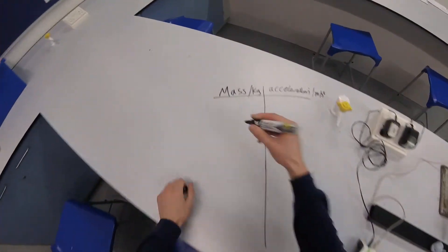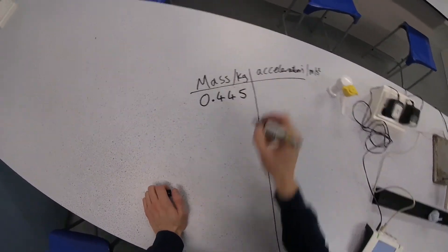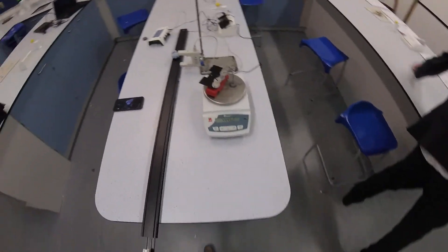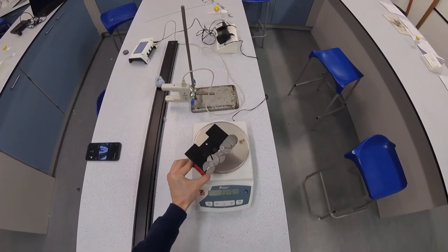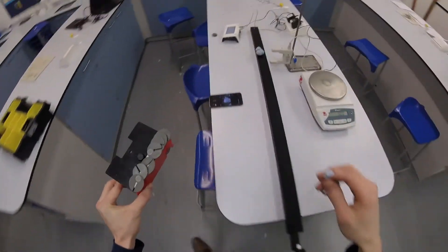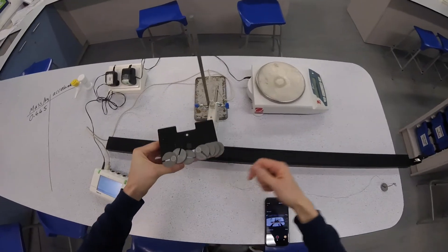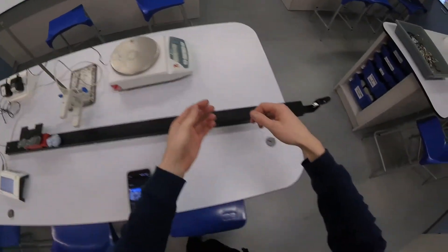You see on top of the car some slotted masses. Those are the same slotted masses we were using last time. Each one has a mass of 10 grams, which is very small compared to the mass of the car. So actually when we change the mass, when we remove those masses from the top of the car, we don't really expect to see a massive change in acceleration because the masses are so small.